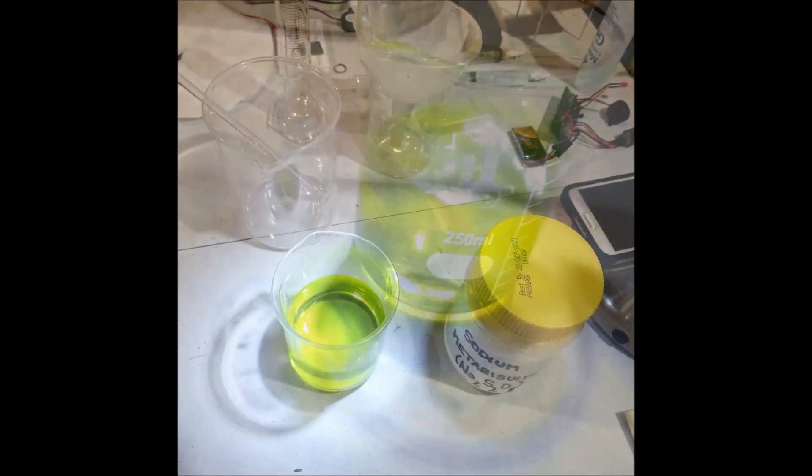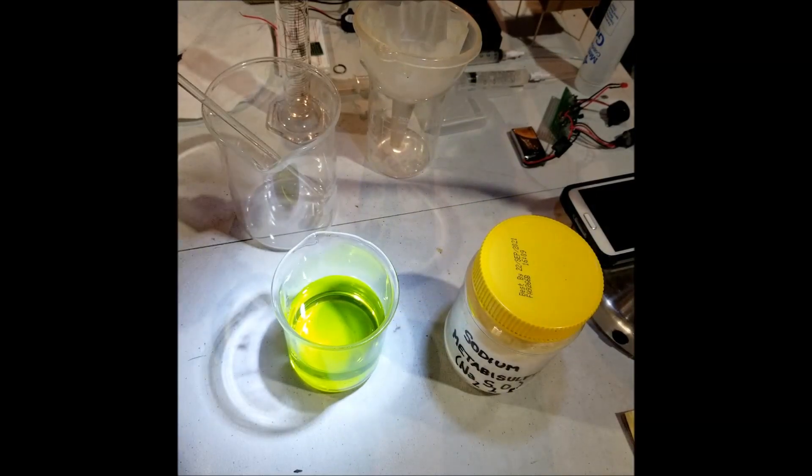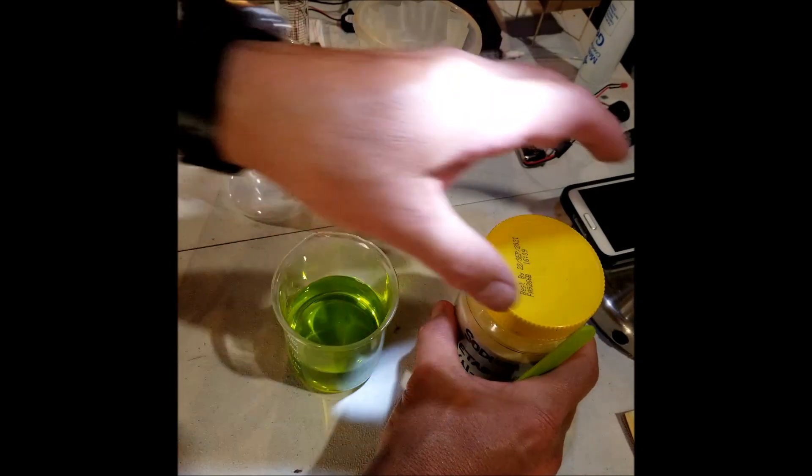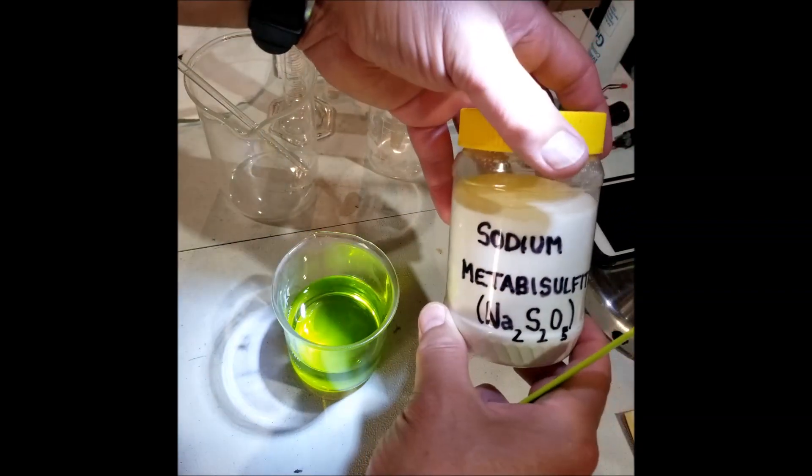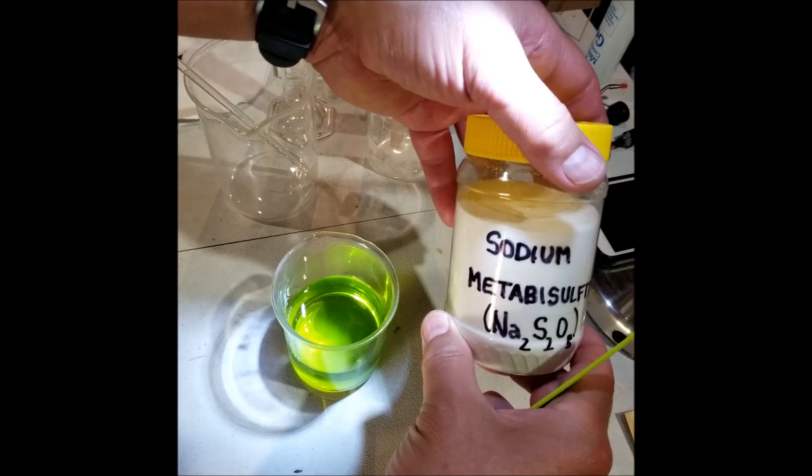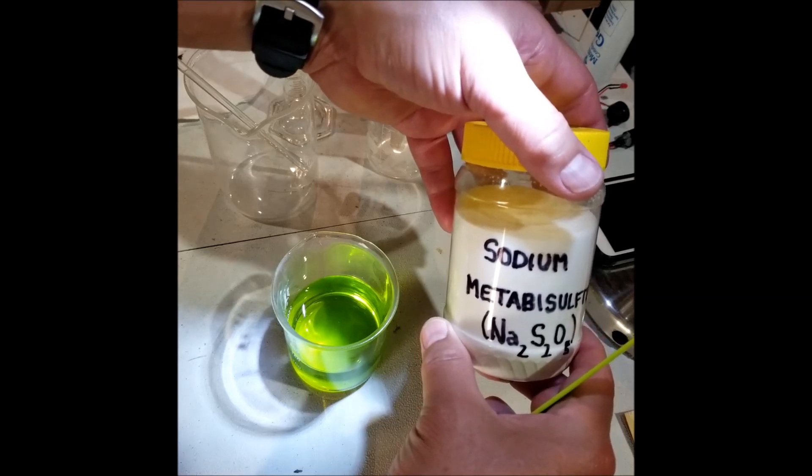We are almost done. Here we have our final solution. We're down to one of our last steps here, and you're going to see something called sodium metabisulfate. This will work with the gold to bring it out of solution back into a metal.